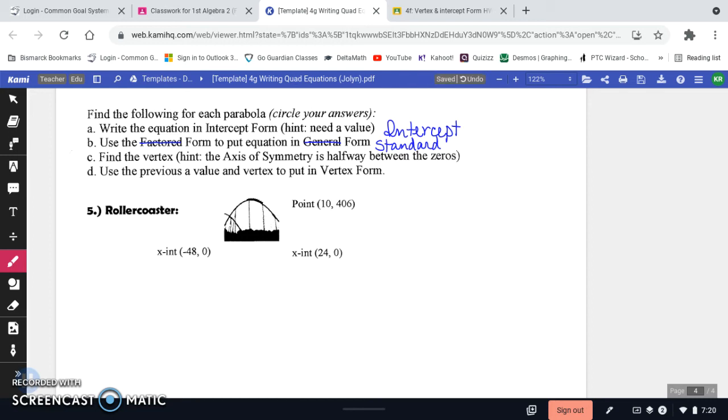So we're going to write step A, write an equation in intercept form. So intercept form, Y equals A times X minus P times X minus Q. Remember that P and Q are your X intercepts. So even though this isn't sketched necessarily on a graph, you still are given the X intercepts. So one X intercept is negative 48, so I'm going to let that be my P. My other X intercept is 24, so that's going to be my Q. So first thing I'm going to do is plug in that P and Q. So it's going to be X minus, and then P is a negative 48, so minus a negative, that'll turn to positive. And then Q is 24.